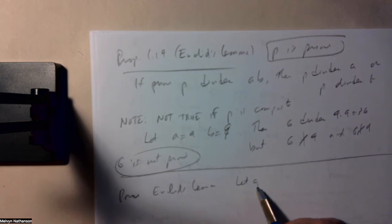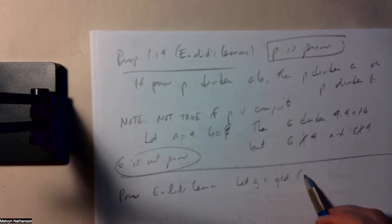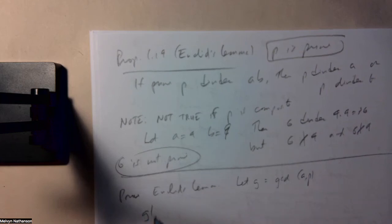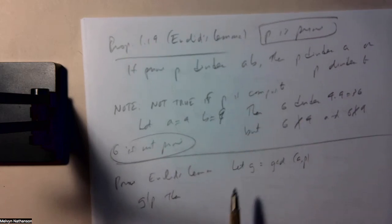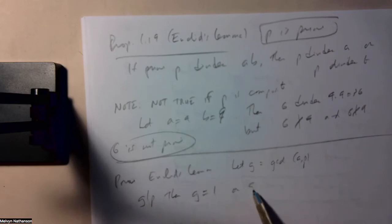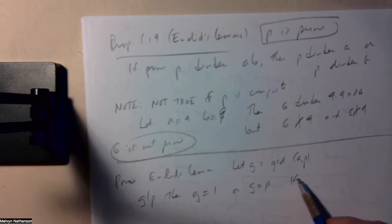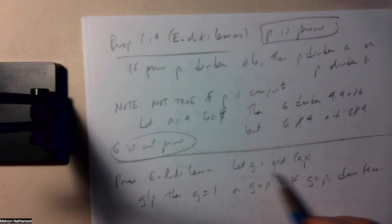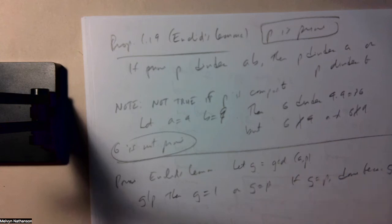Suppose we let g be the greatest common divisor of a and p. So g divides a and g divides p. If g divides p, then the only positive divisors of a prime are 1 and p. So either g equals 1 or g equals p. If g equals p, we're done. Because g divides a, and if g is equal to p, p divides a. So in the case that g equals p, we're done.